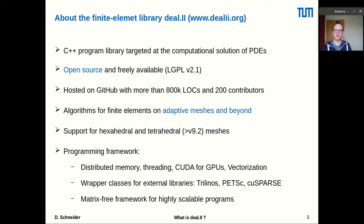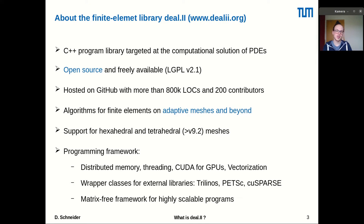What is Deal.II? Deal.II is a general-purpose C++ program library targeted at the computational solution of partial differential equations. It's available under an open source license and hosted on GitHub, similar to preCICE. Deal.II itself provides algorithms and data structures for finite elements on adaptive meshes.